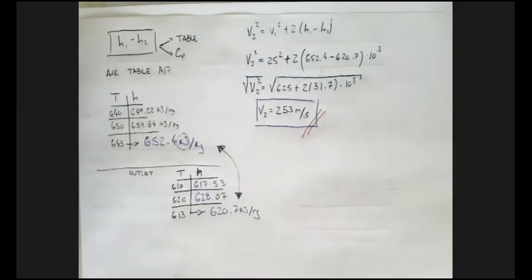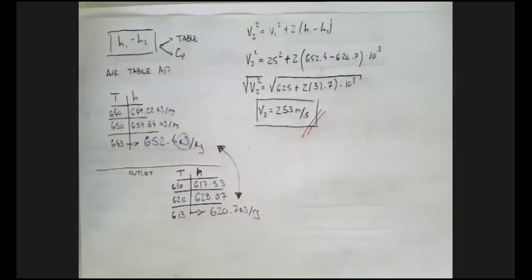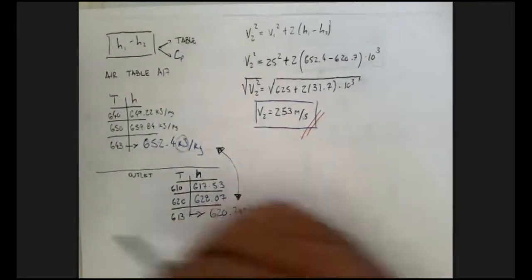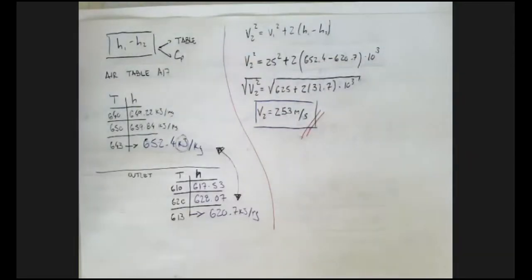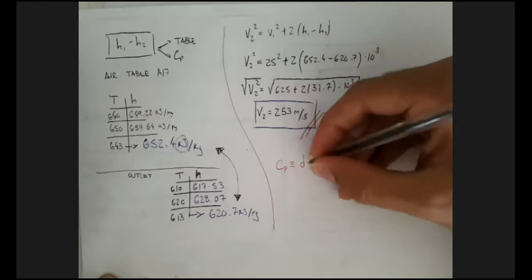That's one way to solve it — using the tables. A student asks whether the temperatures were 340 and 370 Celsius. The answer is that those are in Kelvin — the temperatures were converted to Kelvin because the air table uses Kelvin. Good catch. So that's the table method, which you're already comfortable with from looking up property values.